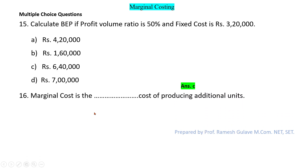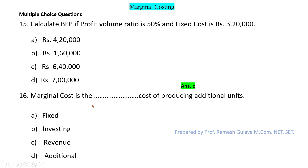The next question says: marginal cost is the dash cost of producing an additional unit. Options are fixed, investing, revenue, or additional. Marginal cost is the additional cost of producing one more unit. So option D — additional — is the right answer.